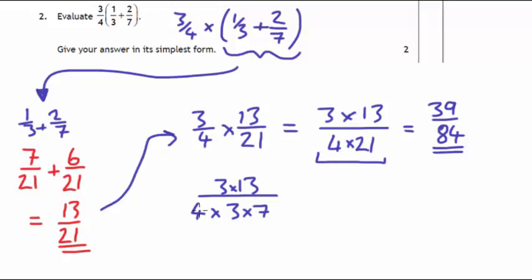So that's the same, it's 4 times 21, it's the same as 4 times 3 times 7. And what we can then do is we can cancel that 3, cancel it with that 3. So what we've got left is we've got 13 over 28, and that is this in its simplest form.